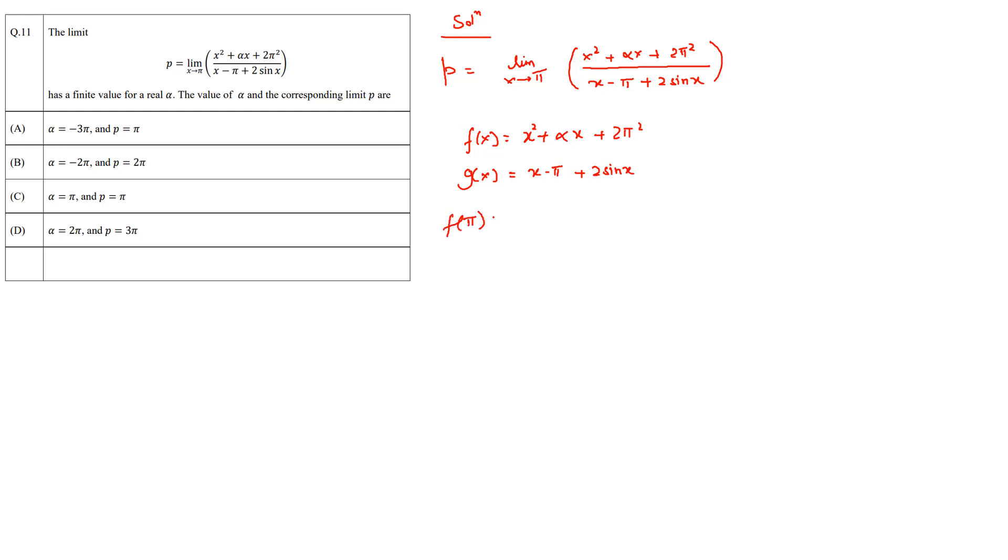f at pi becomes pi squared plus alpha pi plus 2 pi squared, whereas g at pi is pi minus pi plus 2 sin pi. So g at pi equals zero, whereas f at pi equals 3 pi squared plus alpha pi.